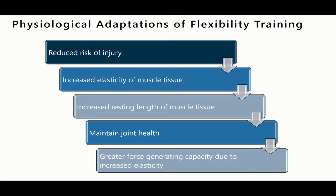The last physiological adaptation is greater force potential due to increased elasticity. If we imagine our muscle like an elastic band — if we have more ability to stretch, there is more force potential. Stretching an elastic band a little and releasing it generates a little force, but stretching it to its full capacity and releasing it generates a lot of force. So there is at least a potential, with increased range of motion within a muscle, to generate more force.